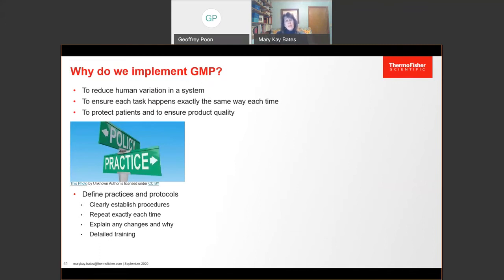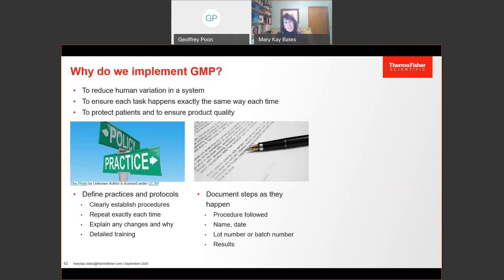We need to ensure that each task happens exactly the same way each time to protect patients and to ensure that the product is safe, pure, is effective, and of high quality. To achieve this goal, we use GMP. GMP is designed to define practices and protocols with clearly established procedures that are repeated exactly the same way each time. And if there are any changes, to clearly explain what was changed and why and when such a change occurred. Detailed training is important to ensure that procedures are performed the exact same way by everyone. And periodic refresher training is critical as well. We all need reminders to keep our skills and procedures from slipping over time.